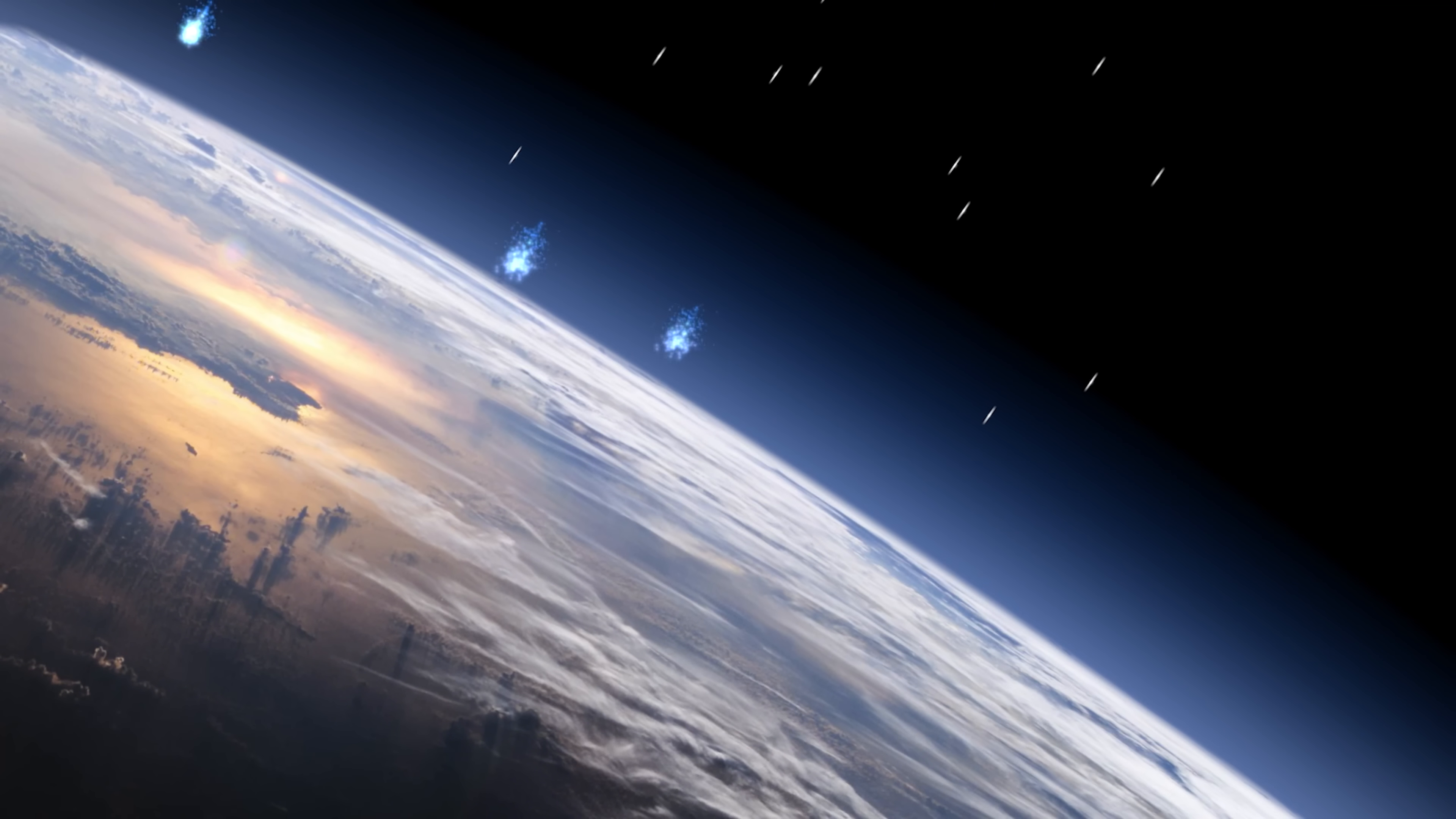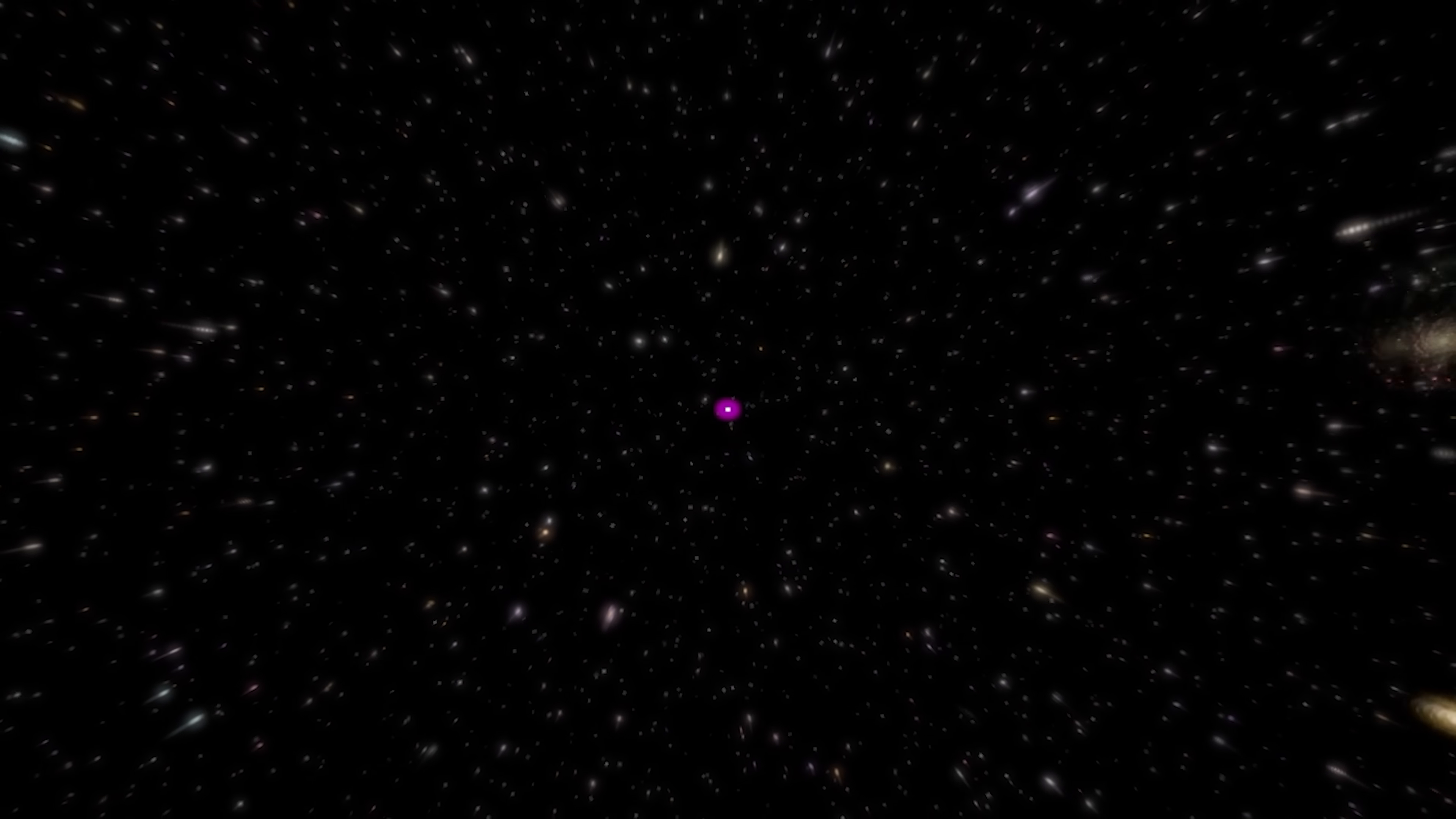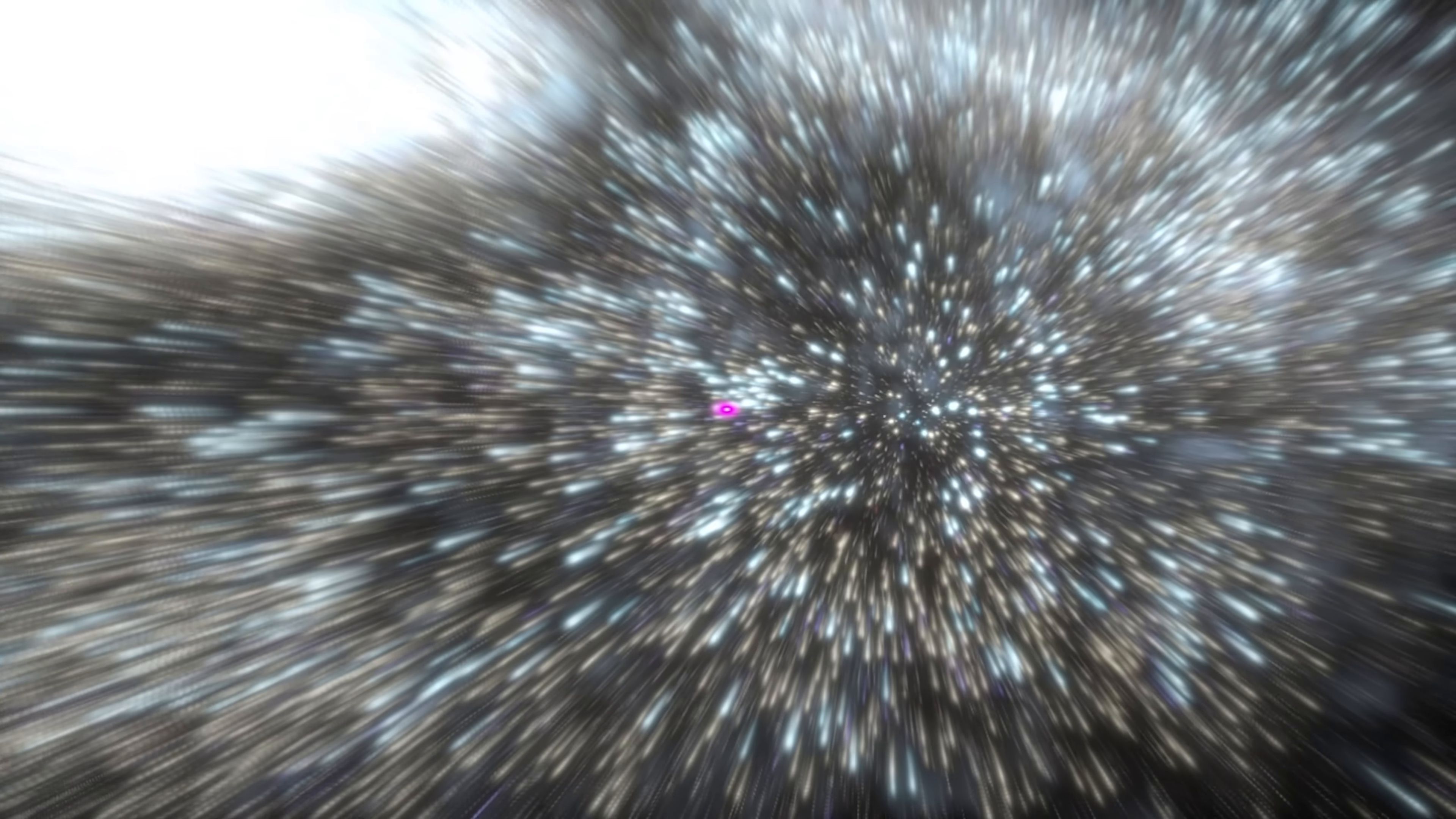Neutrinos are a particularly useful window for us to look through, because, like gravitational waves, they can arrive at us before the light from a major astronomical event does. Because of their ghostly nature that I talked about before, neutrinos take a very direct path to our detector, whereas light faces many obstacles like dust and magnetic fields that interfere with its journey and slow it down.